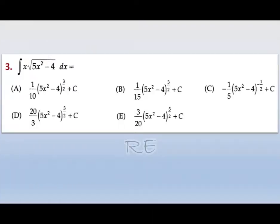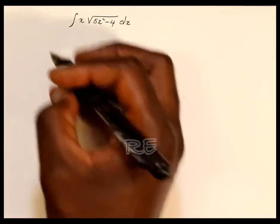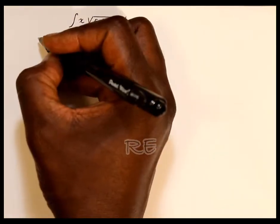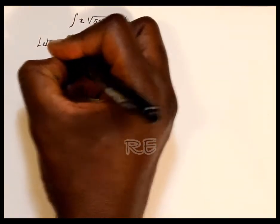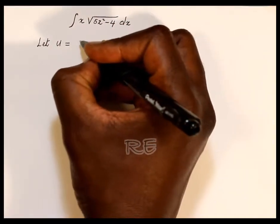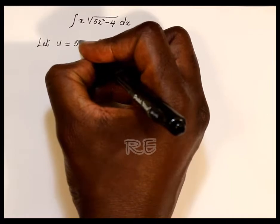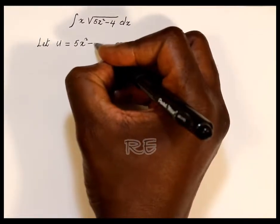For question 3, we need to calculate an indefinite integral. We're going to let u equal to the radicand. U will be equal to 5x squared minus 1.